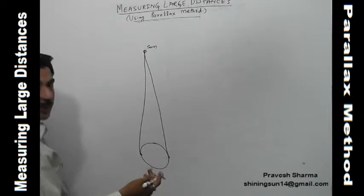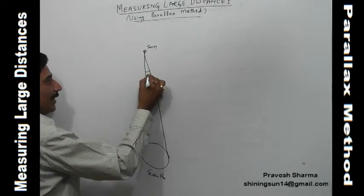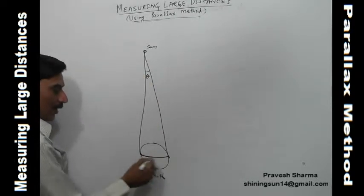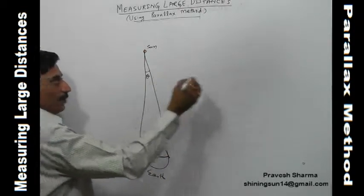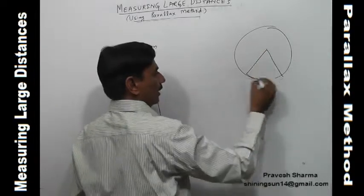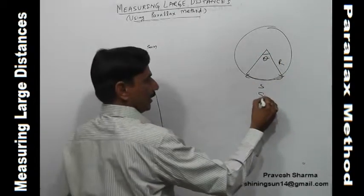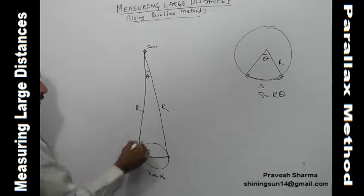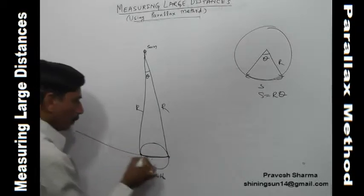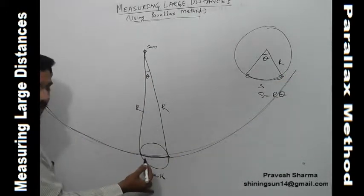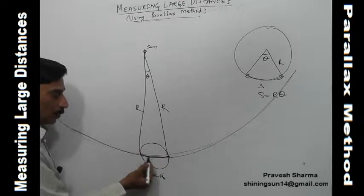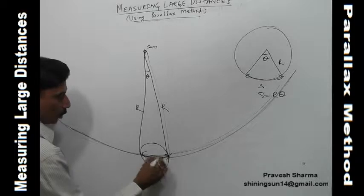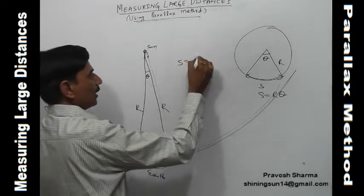Using the basic formula s = rθ: here s is the diameter of Earth, r is the distance between Earth and Sun which we want to find, and θ is the angle found from the two observatories. The diameter of Earth is about 6400 km radius, so the diameter is double that. S is known, θ is known, and therefore r = s/θ, where θ must be in radians. As soon as we put the values of s and θ, we find the distance between Earth and Sun.